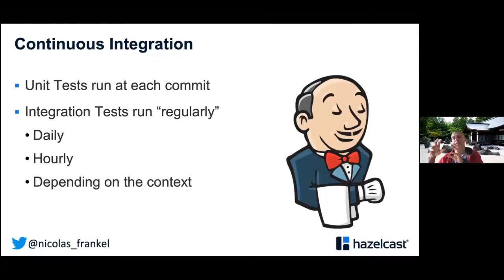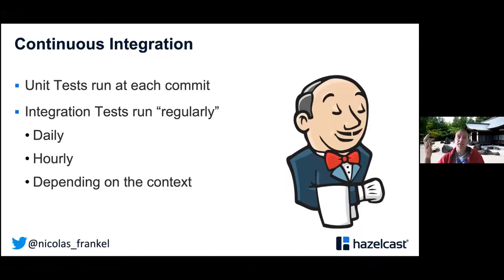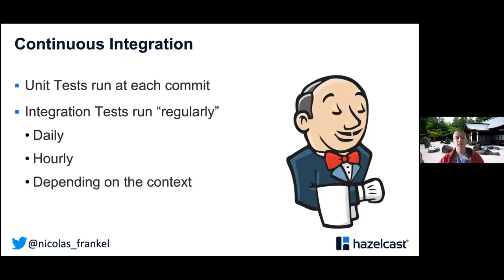If unit tests are quick, you can run them during each commit. However, integration tests can be very, very slow. If you run them during each commit, that might not be great. Depending on your context, you might think about not running them at each commit but running them at regular intervals — hourly, daily, or twice per hour. You need to take into account that the feedback will probably take more time.